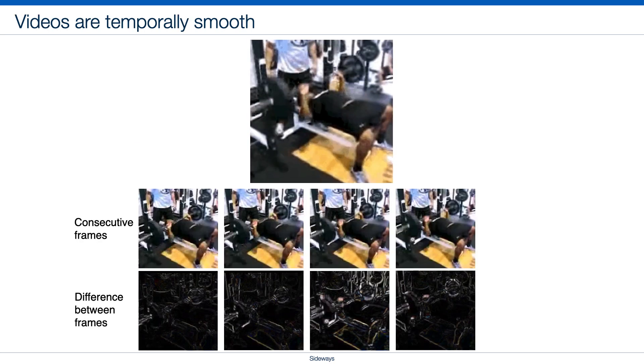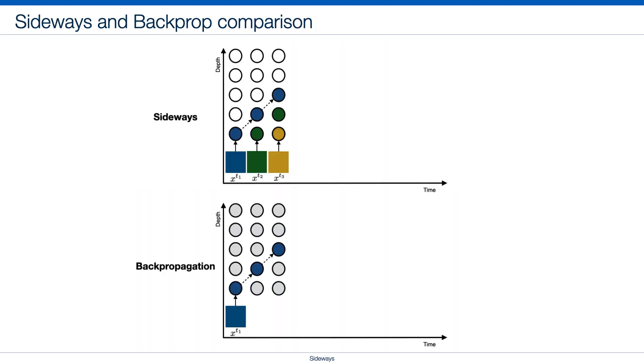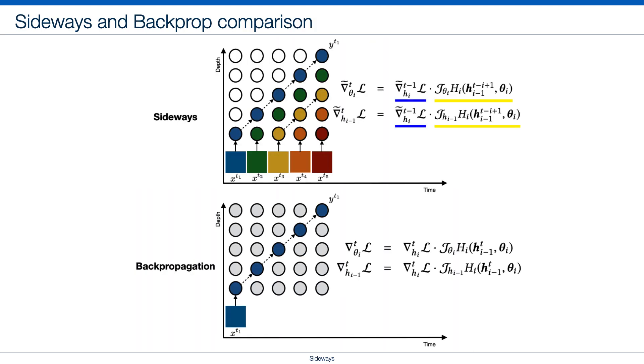But is this blocking necessary for processing videos where consecutive frames are almost the same? We investigate this question and propose Sideways, which does not block computations and allows depth parallelism.